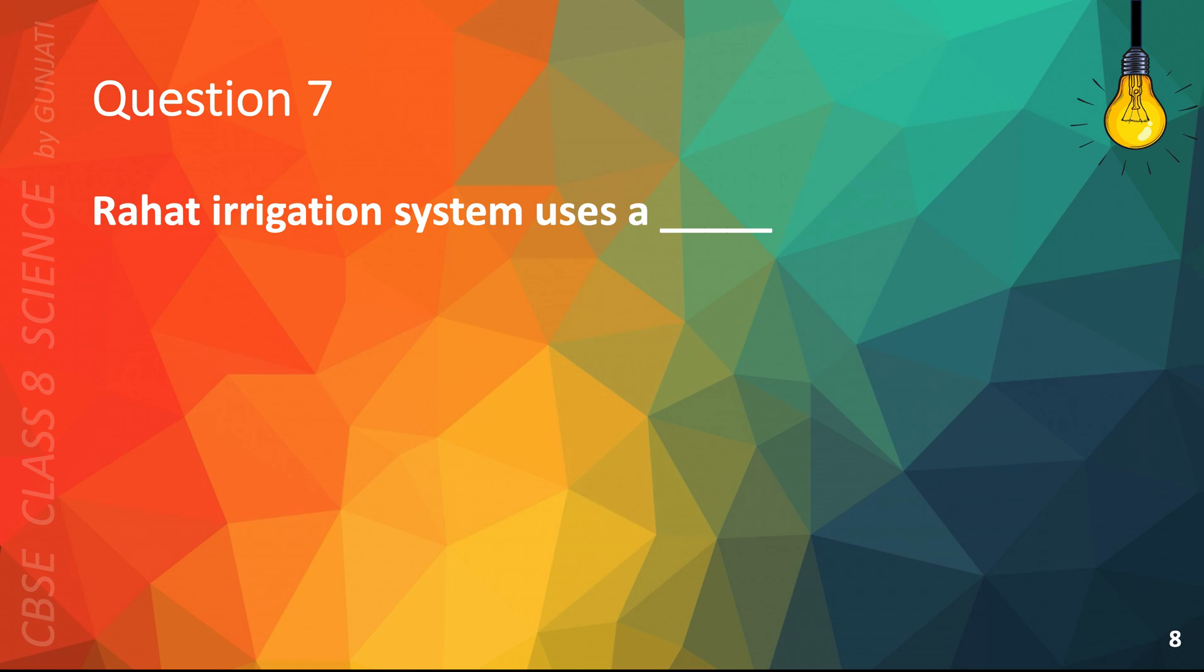Question 7. Rahat irrigation system also uses A. Sheep, B. Dog, C. Bull, or D. Bird. The correct answer is C. Bull.